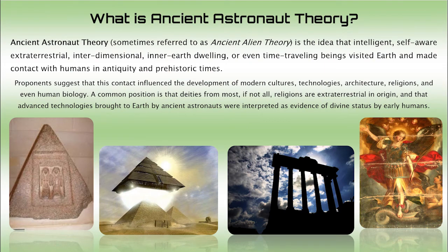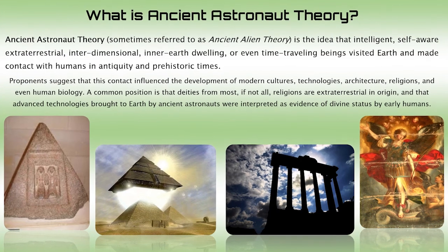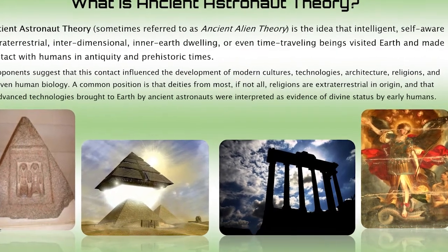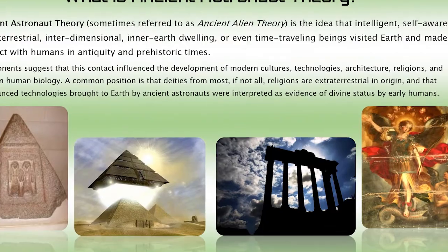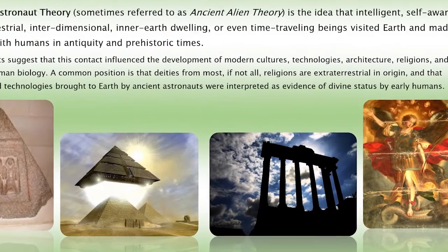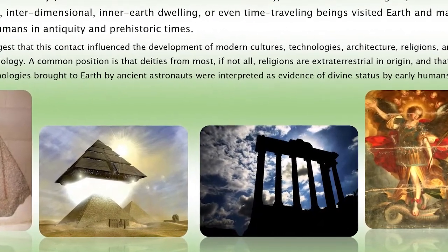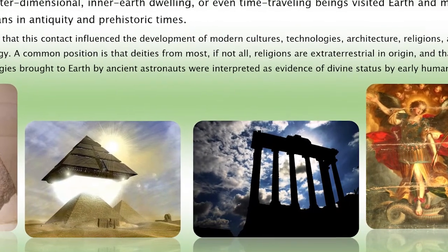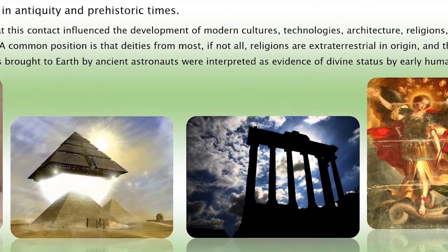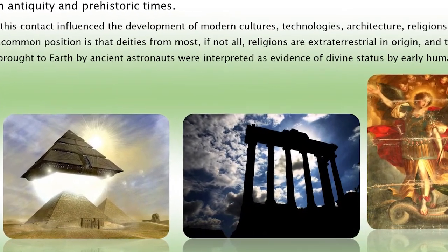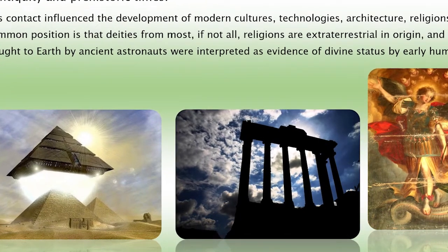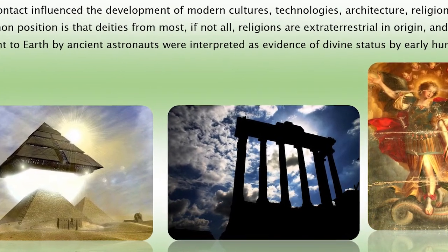Ancient astronaut theory, sometimes referred to as ancient alien theory, is the idea that intelligent, self-aware, extraterrestrial, interdimensional, inner-earth dwelling, or even time-traveling beings visited earth and made contact with humans in antiquity and prehistoric times. Proponents suggest that this contact influenced the development of modern cultures, technologies, architecture, religions, and even human biology.